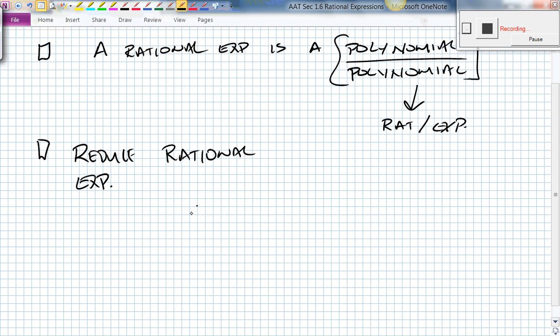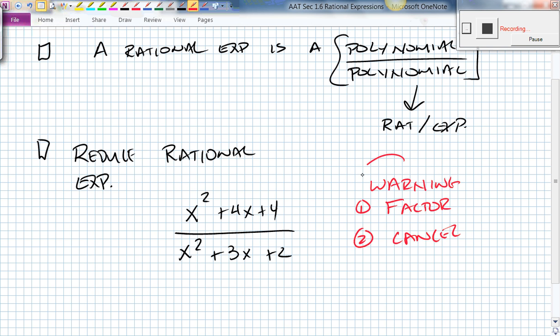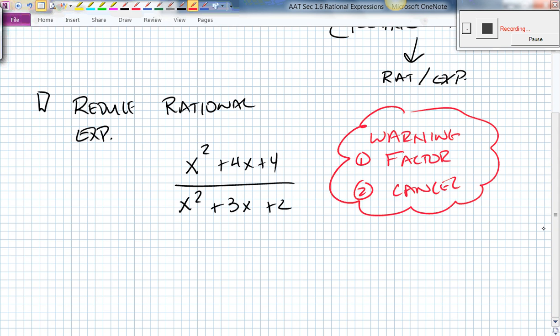The first example is x squared plus 4x plus 4 all divided by x squared plus 3x plus 2. Now, we're not allowed to just cancel out our x squared because we're adding everything together. So there's a little warning for you. First, we're going to factor, and then we're going to cancel. That'll be how we do things from now on.